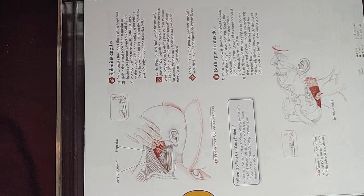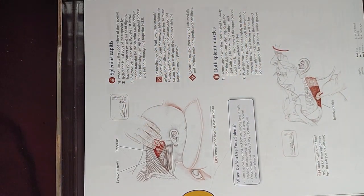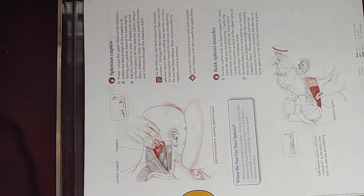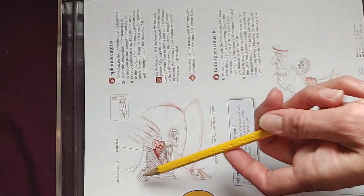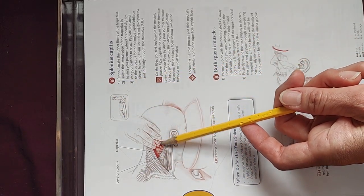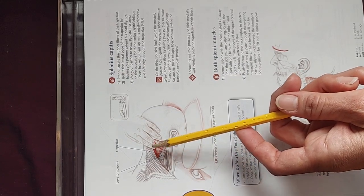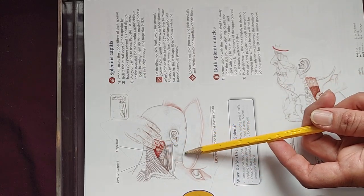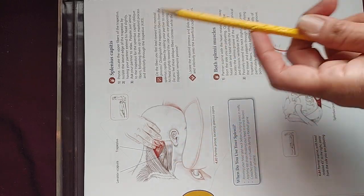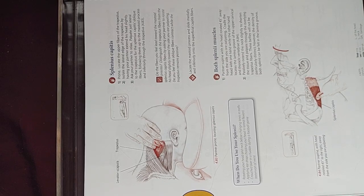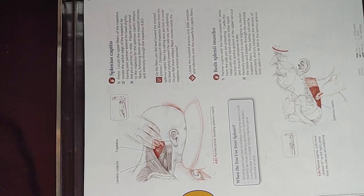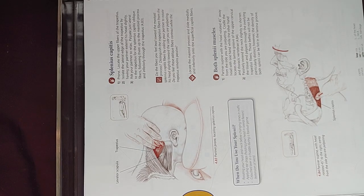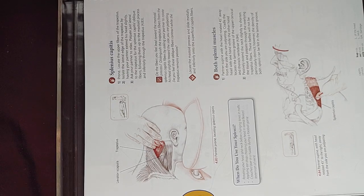The therapist has the client in prone position and is trying to access the splenius capitis. You can see the trapezius and the levator scapula here. Have your client in prone and locate the upper fibers of the trapezius. Isolate the lateral edge of the trapezius by having your partner extend the head slightly. Then ask your partner to relax and palpate just lateral to the trapezius, along the splenius capitis oblique fibers.